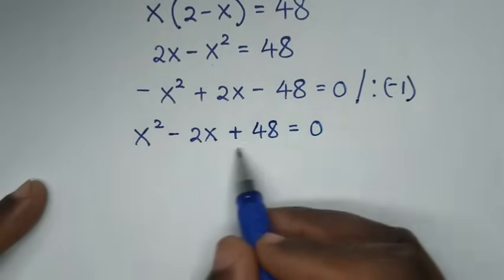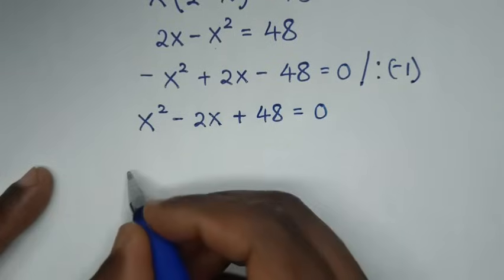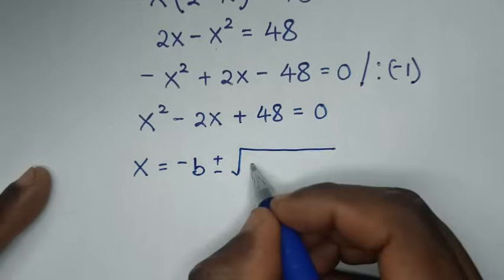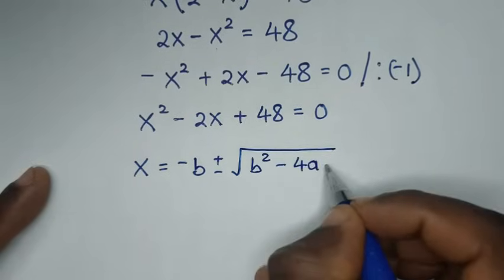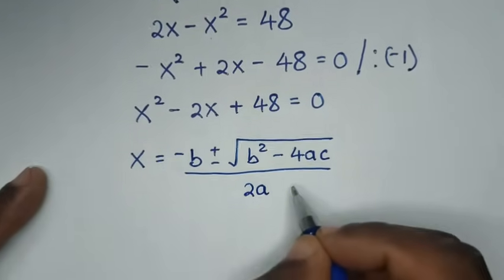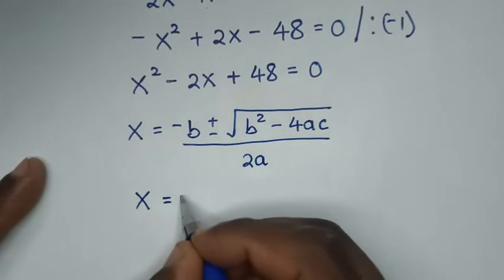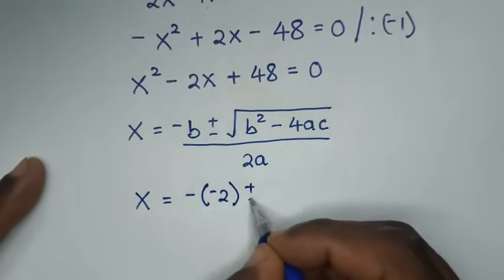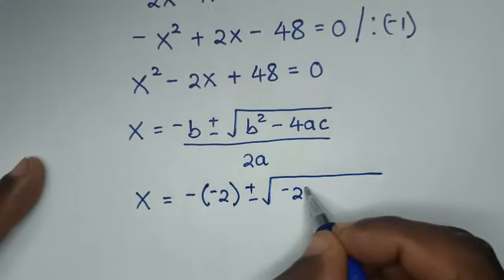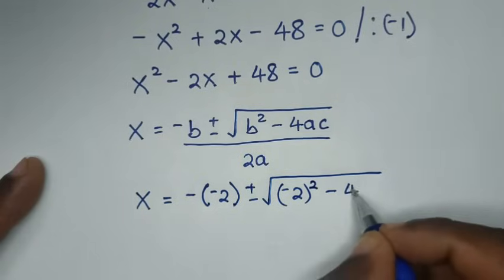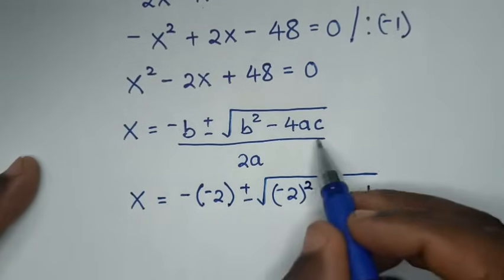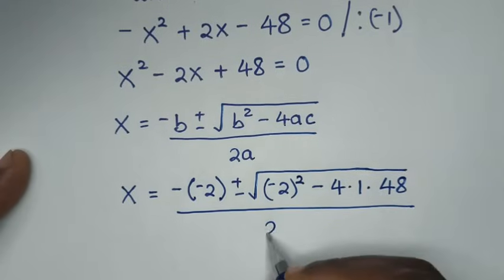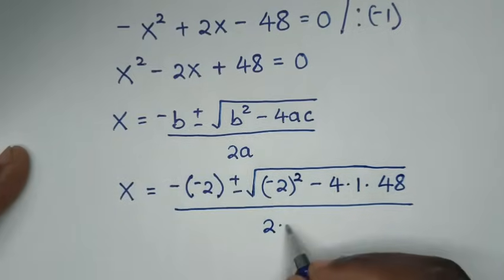From this quadratic equation, we solve using the quadratic formula: x equals negative b plus or minus square root of b squared minus 4ac, all over 2a. Here b is the coefficient of x, which is negative 2; a is 1; and c is 48. So x equals negative(negative 2) plus or minus square root of (negative 2) squared minus 4 times 1 times 48, all over 2 times 1.